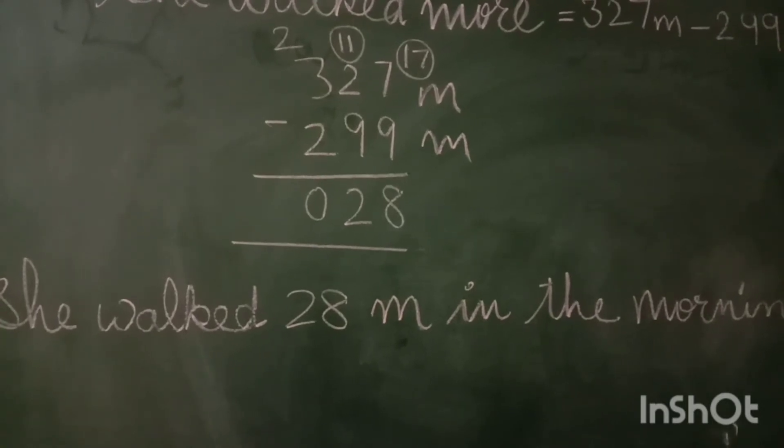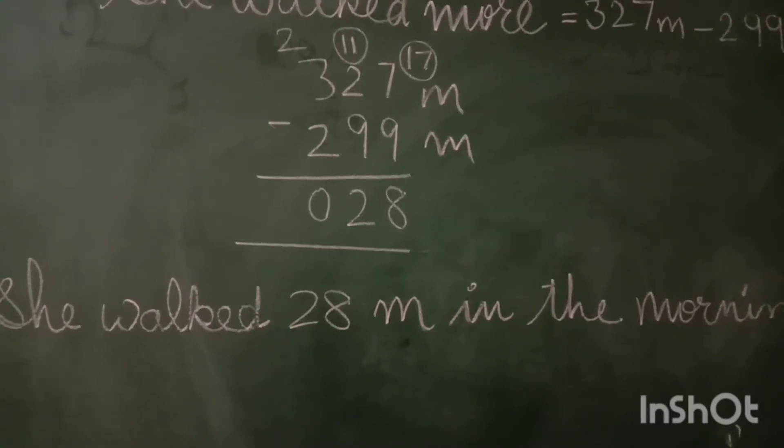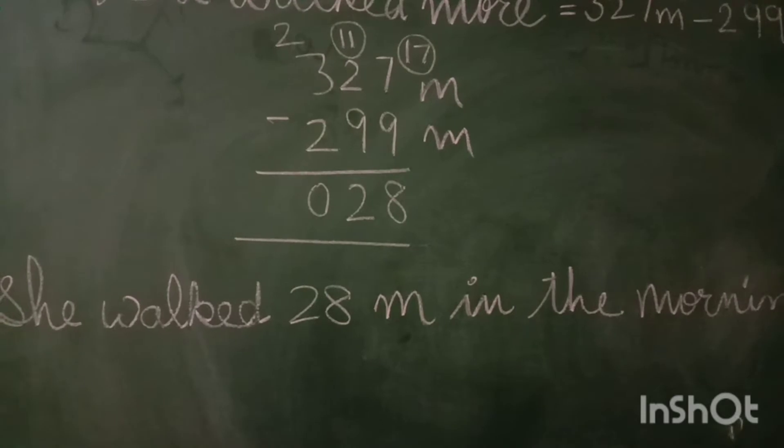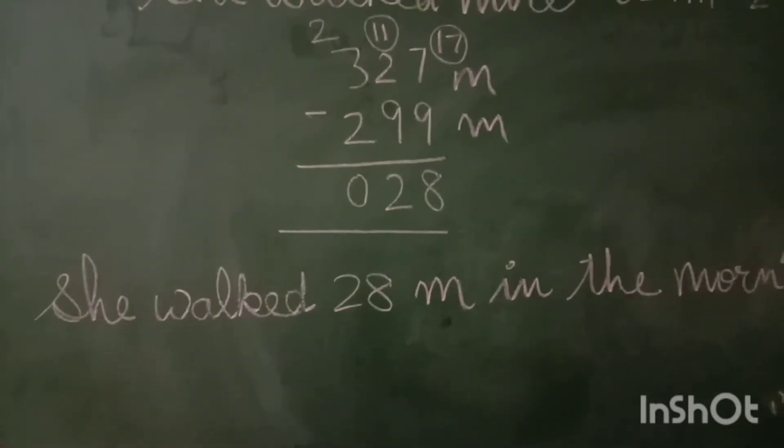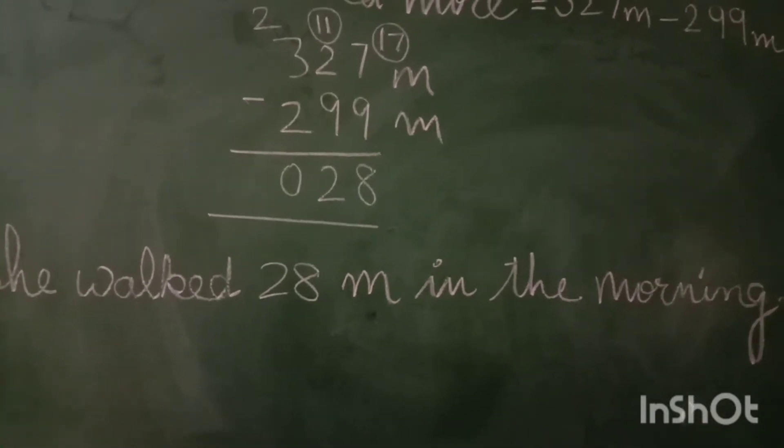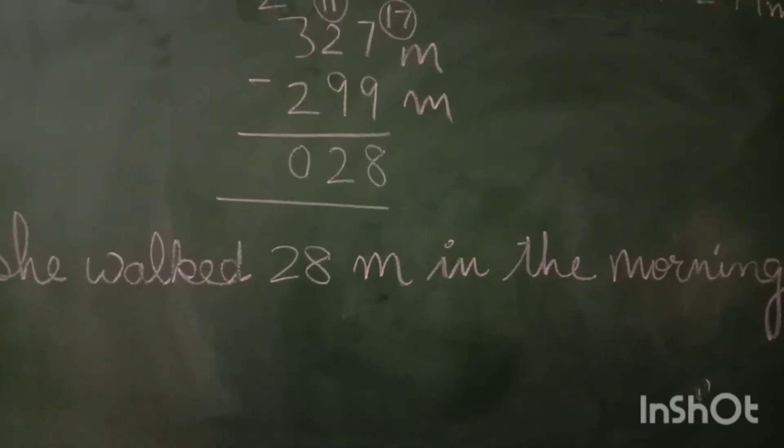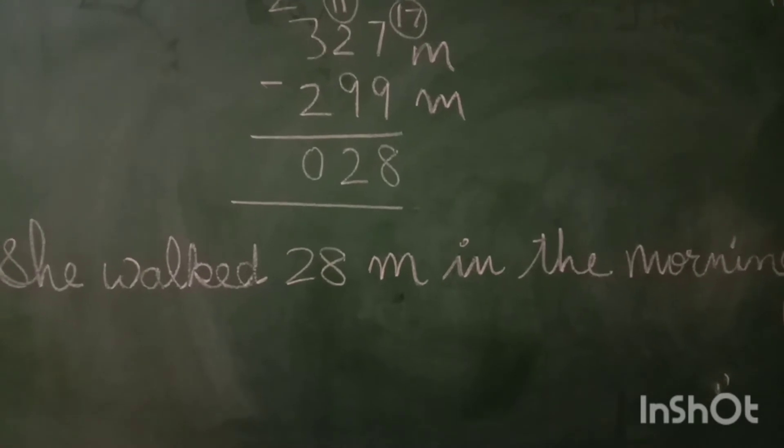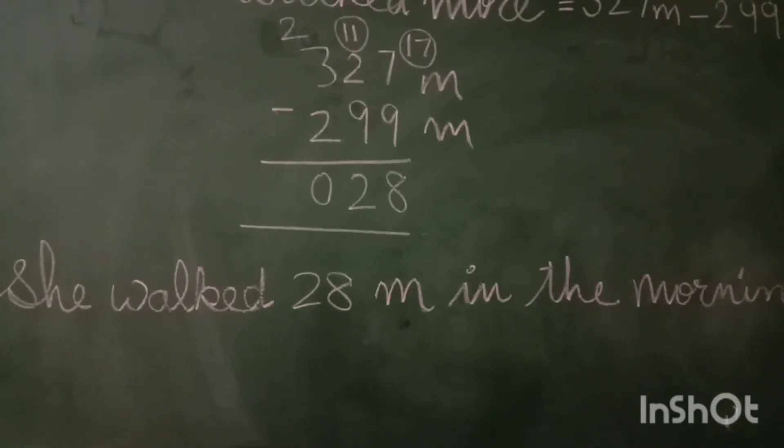7 becomes 17 minus 9 is 8. 1, 2 will become 1, 11 minus 9 is 2, and it will become the reverse number. So 28, you got the answer. She walked 28 meters more in the morning. She walked in the morning by 28 meters.